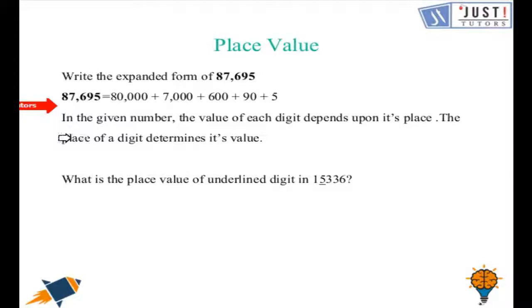So in the given number the value of each digit depends upon its place. The place of a digit determines its value. So for example the place value of 8 is 10,000th in this number. The place value of 7 is thousands in this number.